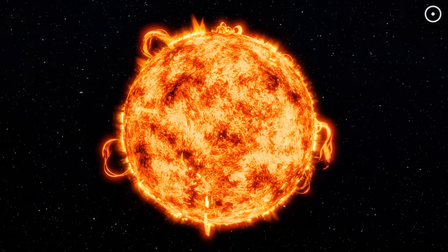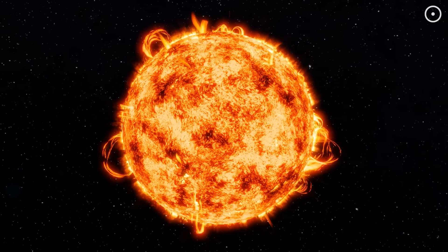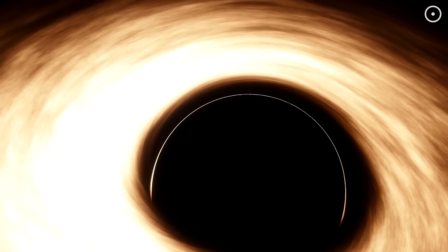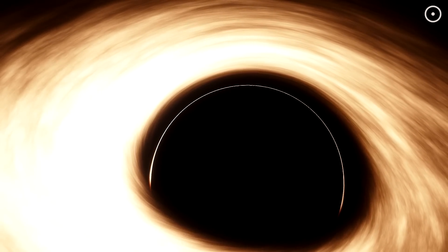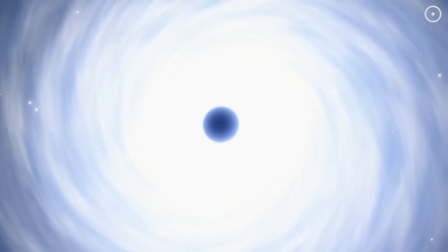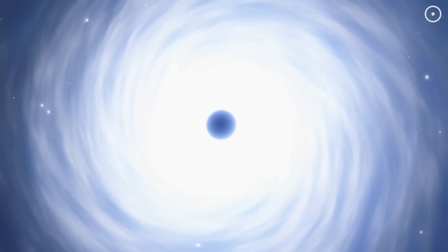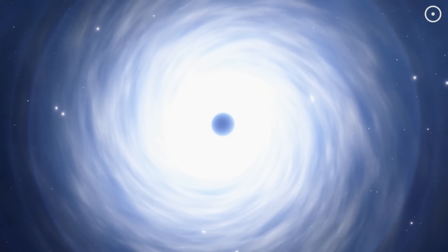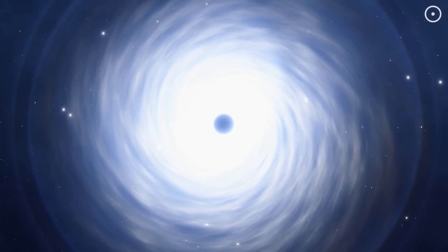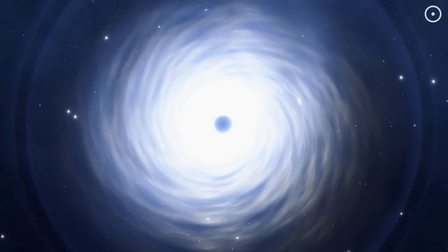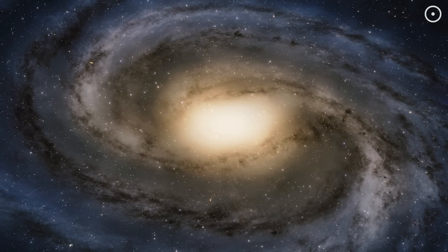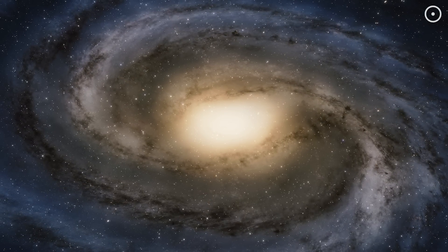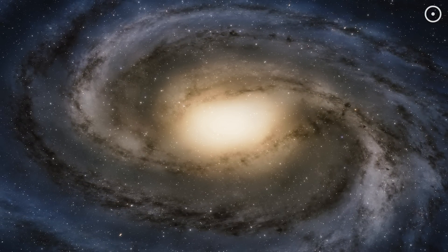It starts off as an incredibly massive star, and through its short but intense life, it helps create some of the largest black holes in the universe. This process is crucial for the formation of supermassive black holes, which are key components in the development of galaxies. The black holes left behind by quasi-stars can seed the centers of galaxies, helping to shape their structure and evolution.